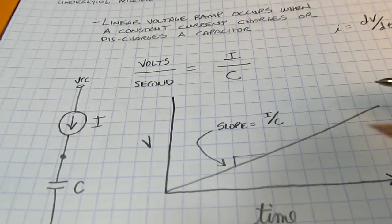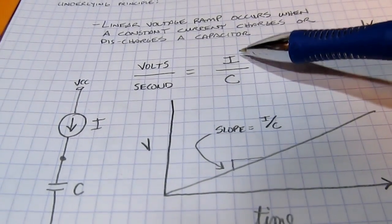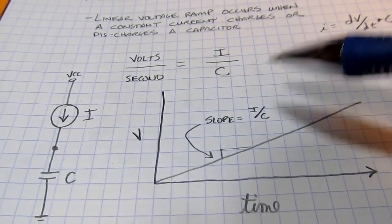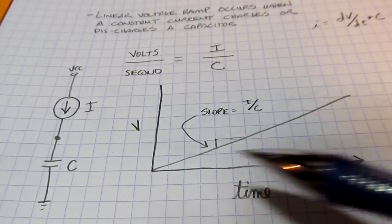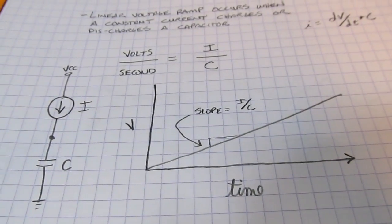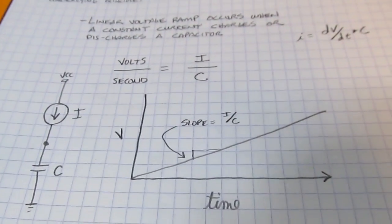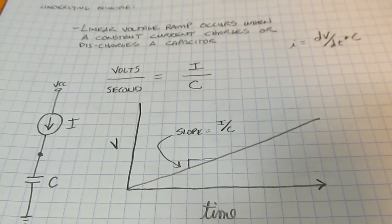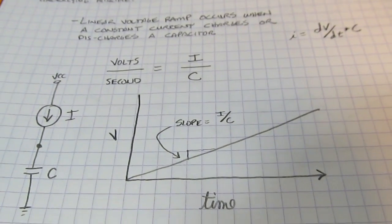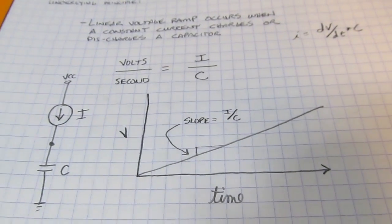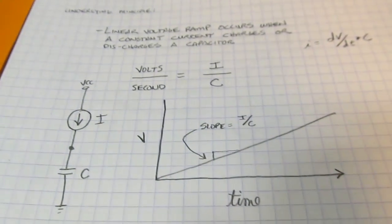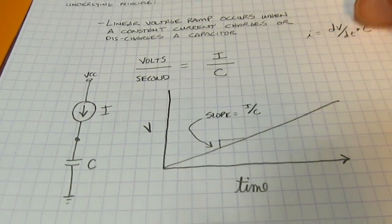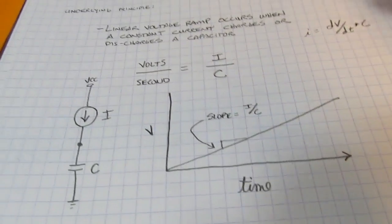By varying either the capacitor or the current we can change the slope of a rising or falling voltage. We just change the polarity and magnitude of the current into a capacitor to create a rising or falling slope. This is essentially the same circuit used in analog oscilloscopes to generate the sweep voltage to drive the beam across the screen.